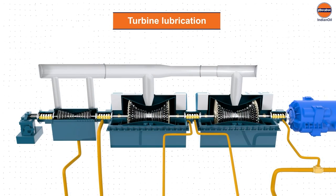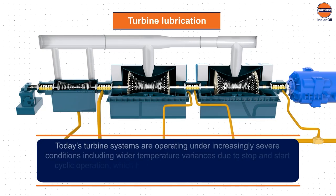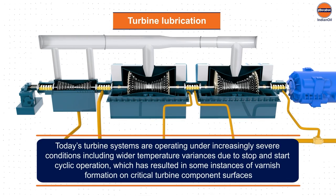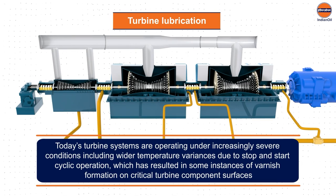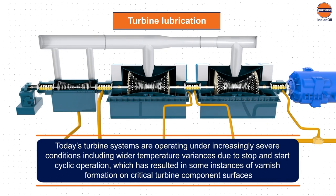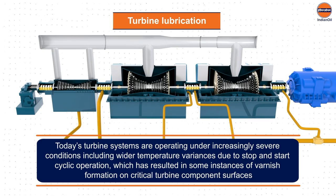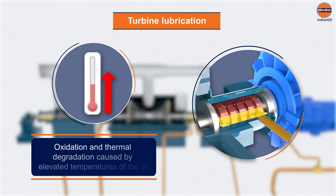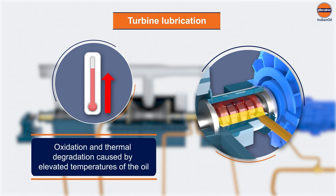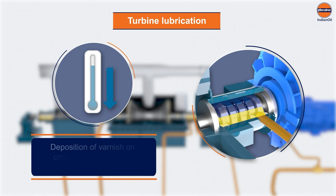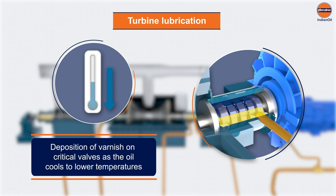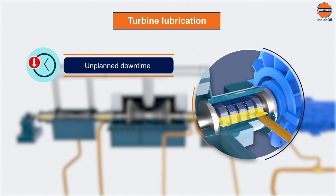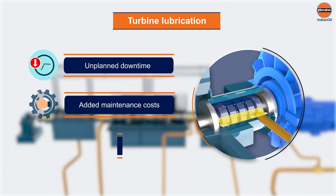To meet the ever-increasing demands for electricity, today's turbine systems are operating under increasingly severe conditions, including wider temperature variances due to stop-and-start cyclic operation, which has resulted in varnish formation on critical turbine component surfaces. Temperature fluctuation in turbine oil can result in oxidation and thermal degradation, initially caused by elevated temperatures, followed by the deposition of varnish on critical valves as the oil cools. Resulting stuck valves can cause unplanned downtime, added maintenance costs, and lower productivity.